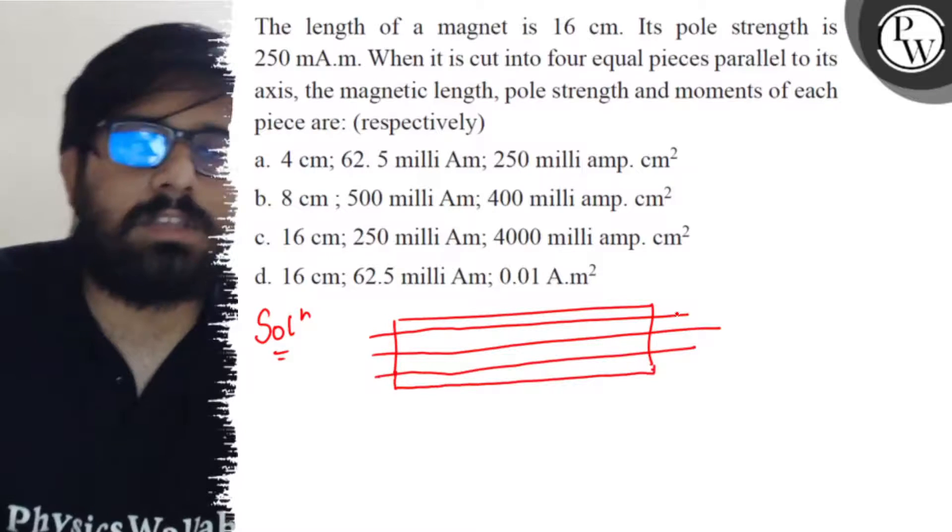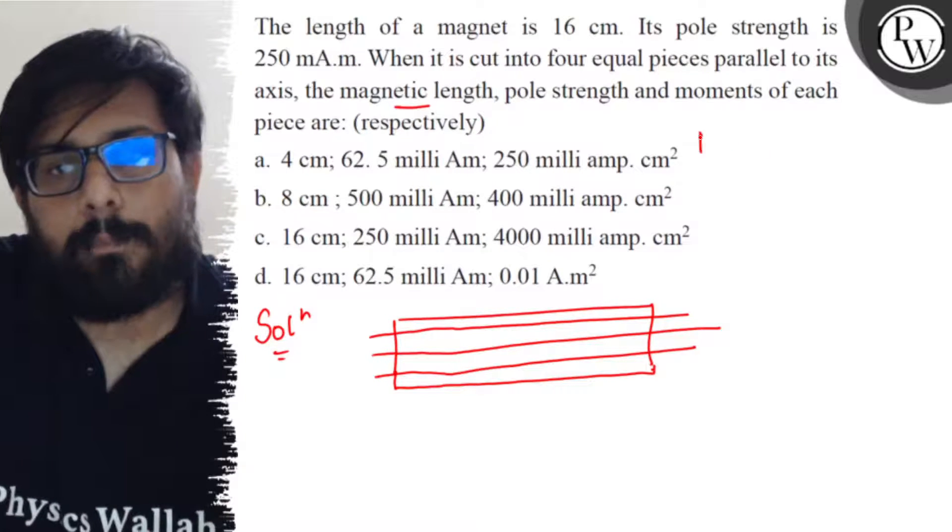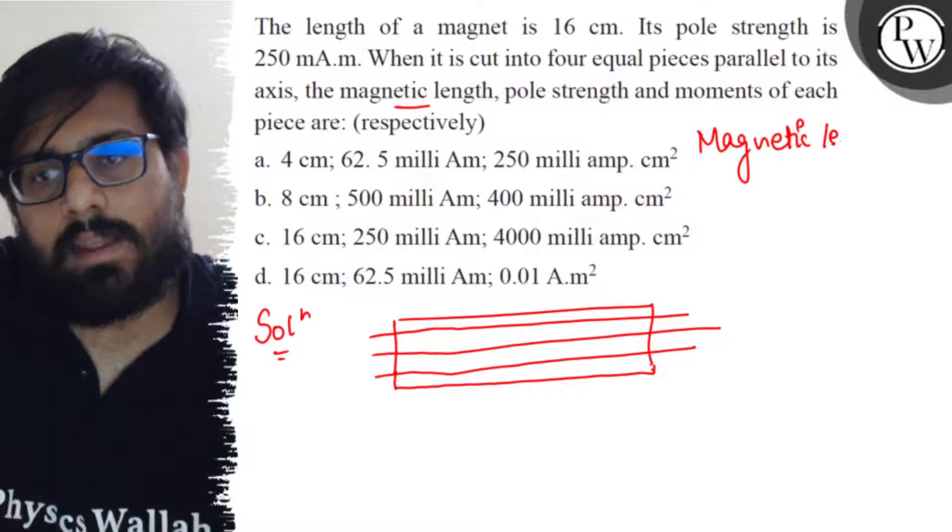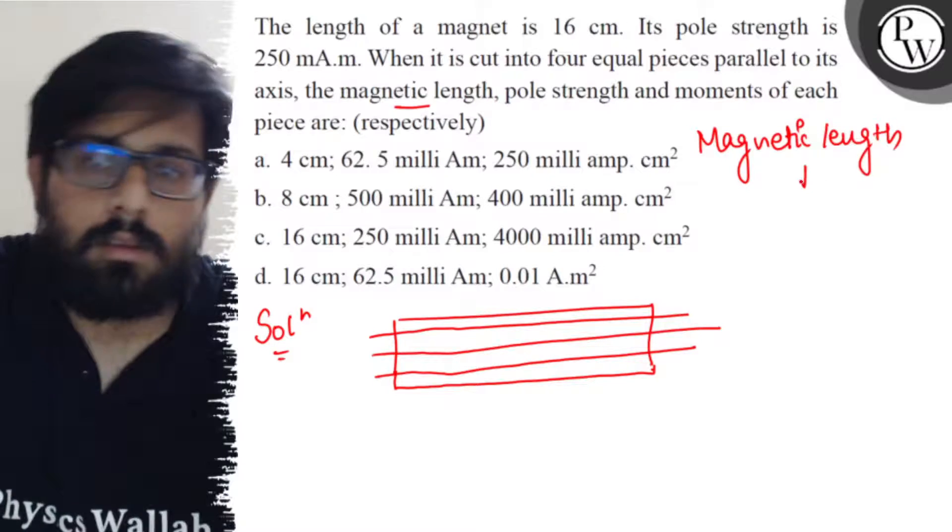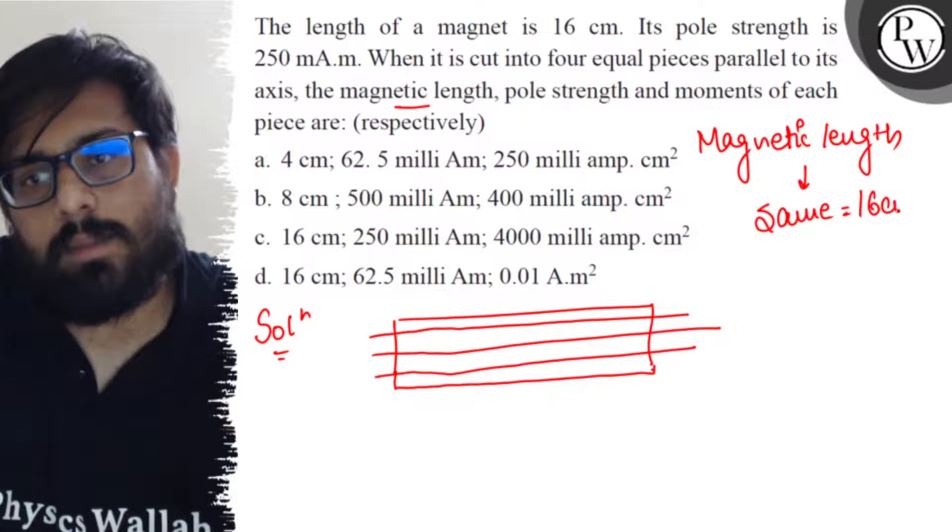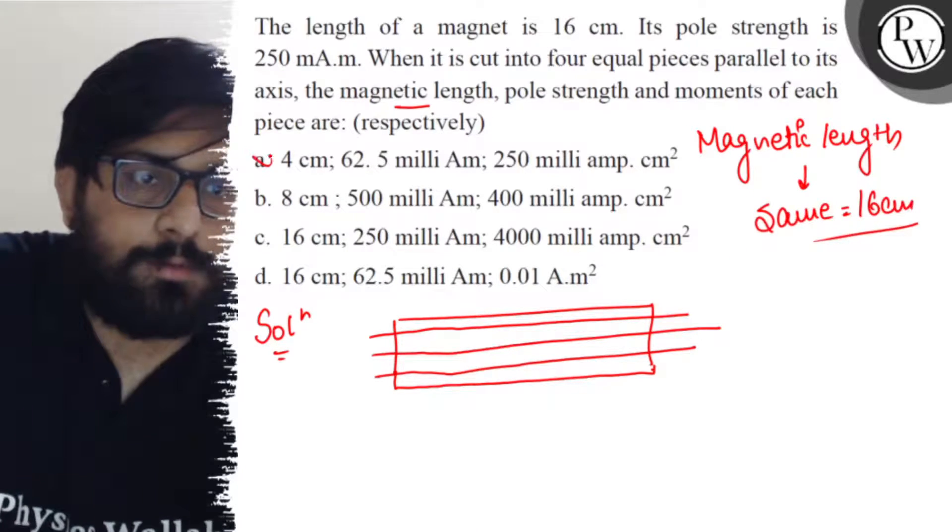When cut into four equal parts, the magnetic length remains the same at 16 cm. So Option A or B can't be right.